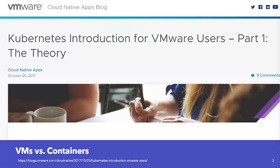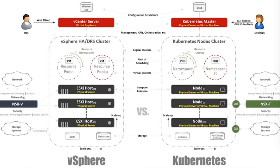I want to start with this great blog post from Hany Michael over at vmware.com entitled 'Kubernetes Introduction for VMware Users, Part One: The Theory.' Coming from a virtualization and VMware background, I suspect many of you do as well. In the post, Hany compares all the traditional components of a VMware infrastructure with the components that make up a cloud native Kubernetes infrastructure, using many helpful graphics.